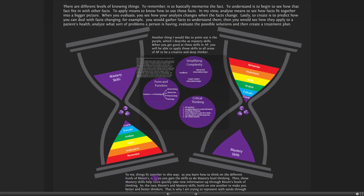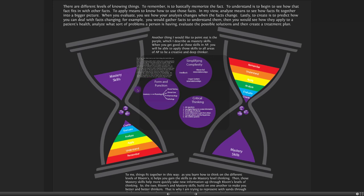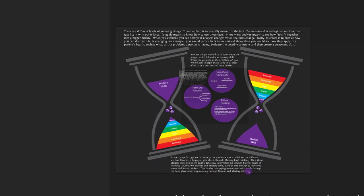These ideas fit together like this: as you learn to think on different levels of Bloom's Taxonomy, it helps you gain mastery-level thinking skills. As you move up Bloom's you develop mastery skills, and those mastery skills help you more quickly take in new information back through Bloom's levels. Building up through Bloom's gives you mastery skills, and mastery skills help you build back up through Bloom's quickly — keep rotating between Bloom's and mastery thinking because they build on each other.